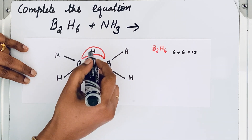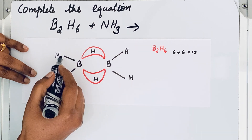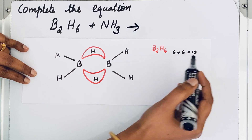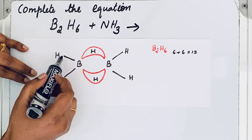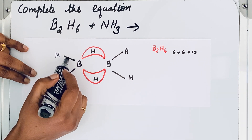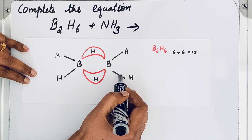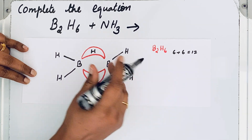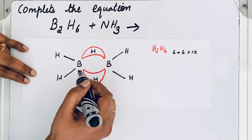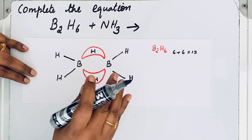Of the 12 valence electrons, two electrons go to each terminal B–H bond. There are four terminal bonds — two here, two here — giving eight electrons total used for terminal bonds. That leaves only four electrons remaining.